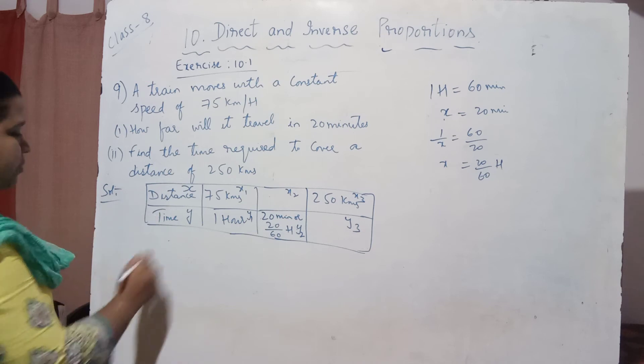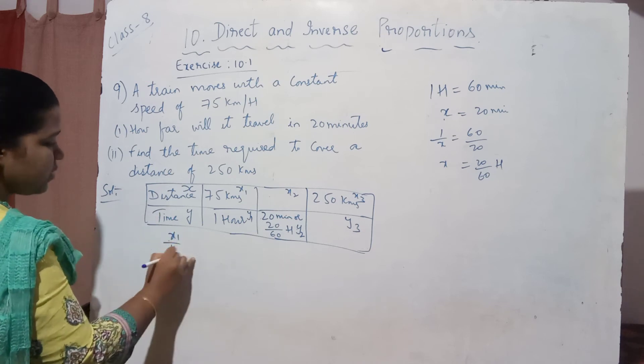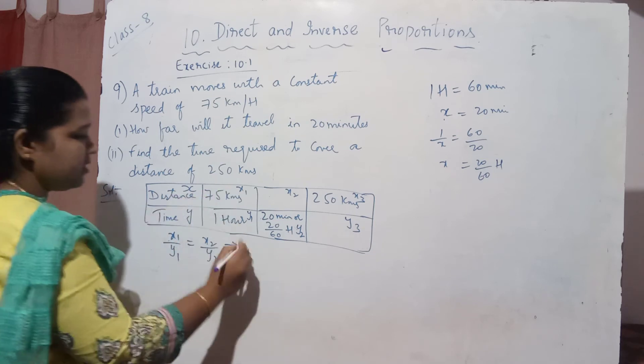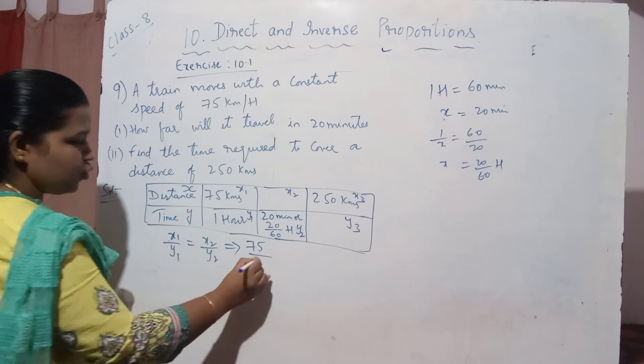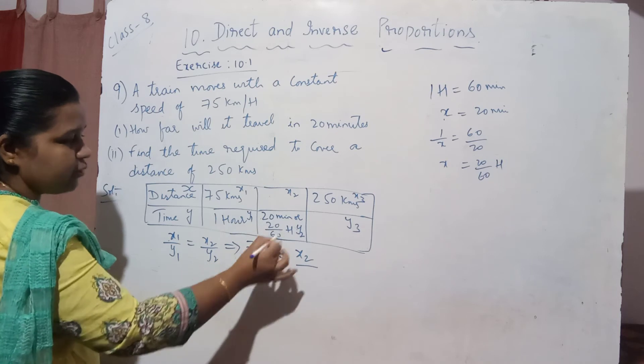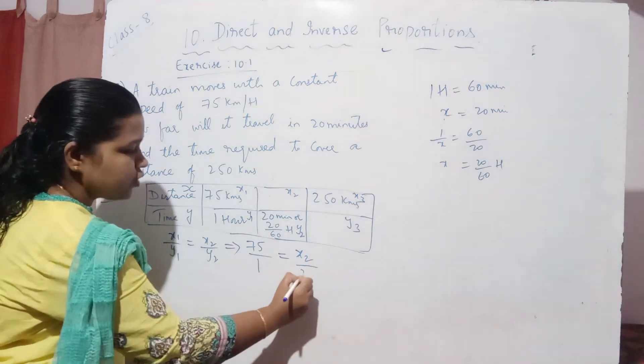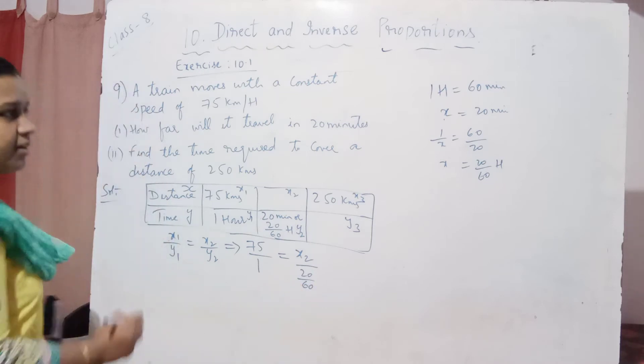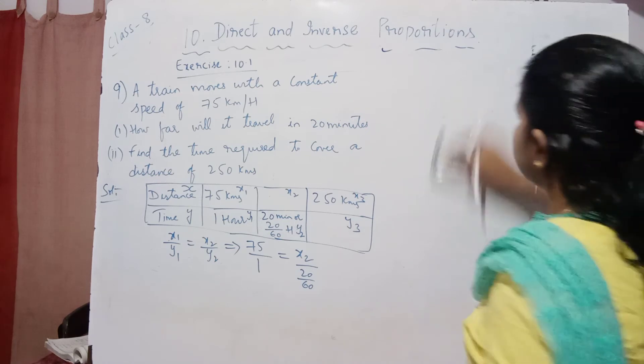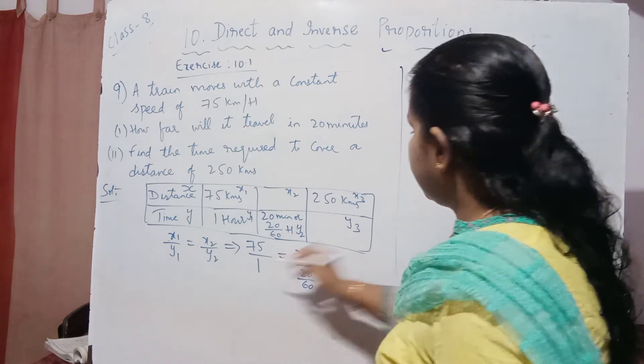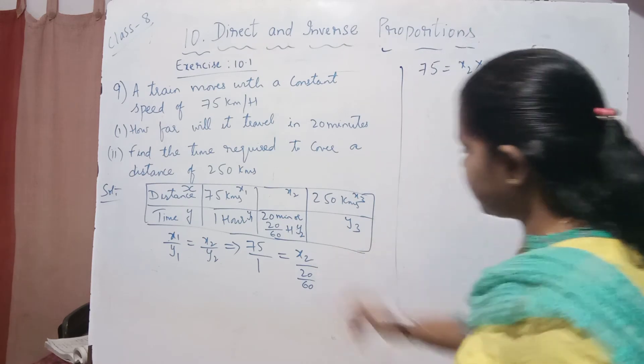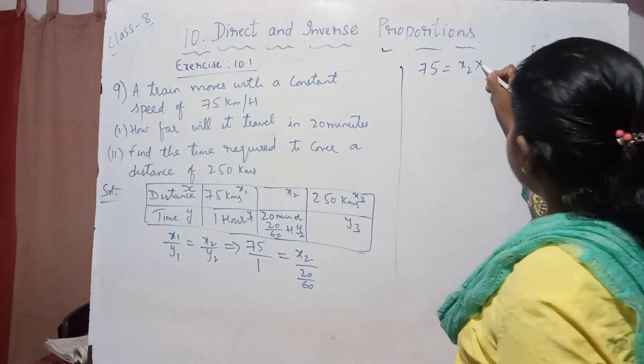This means it is in direct proportion. We know the direct proportion formula: x1 by y1 equals x2 by y2. So 75 by 1 equals x2 by y2. I have to write this one converted into hours because both should be in hours, that is 20 by 60. So 75 equals x2 divided by 20 by 60, which means if I write as multiplication, it becomes the reciprocal 60 by 20.